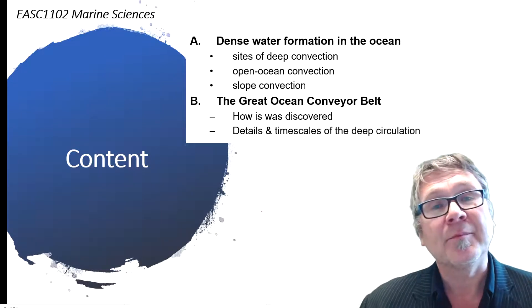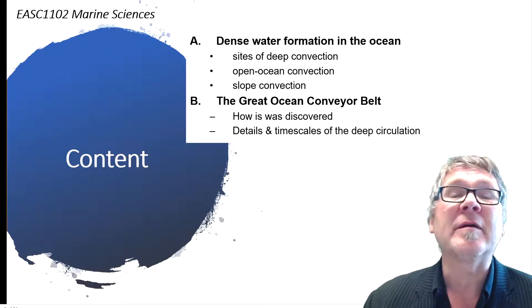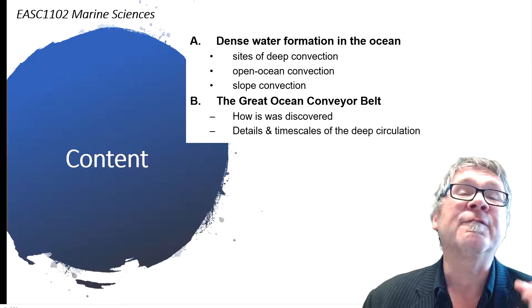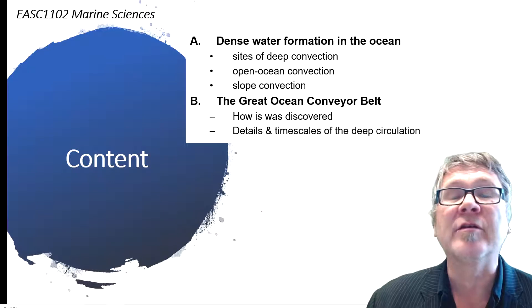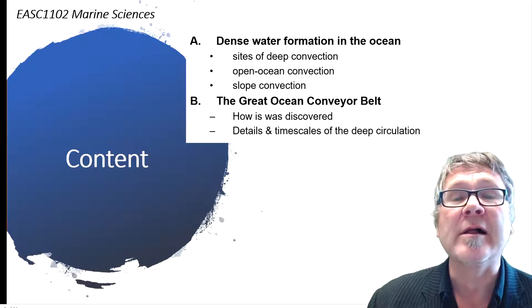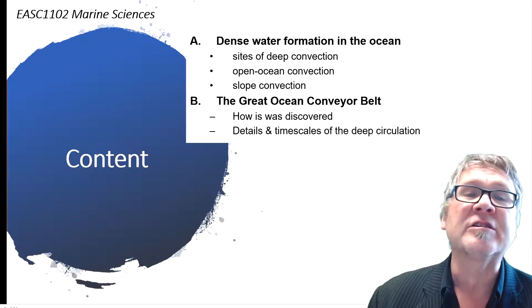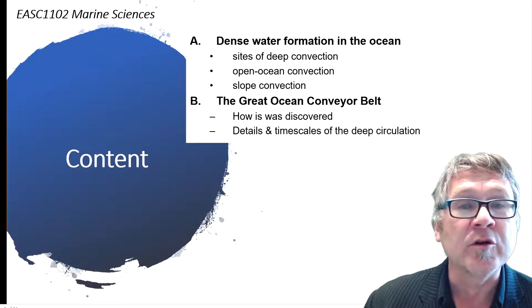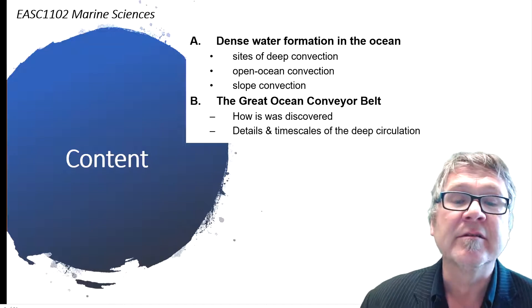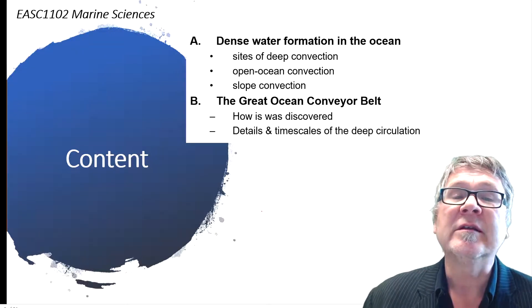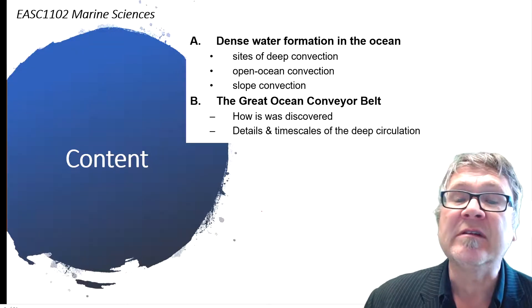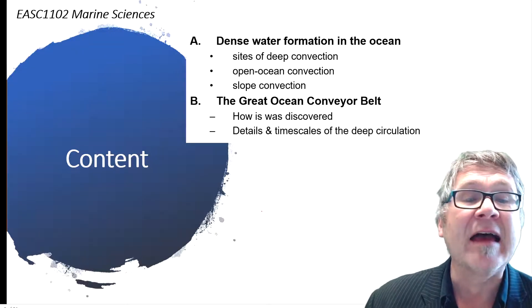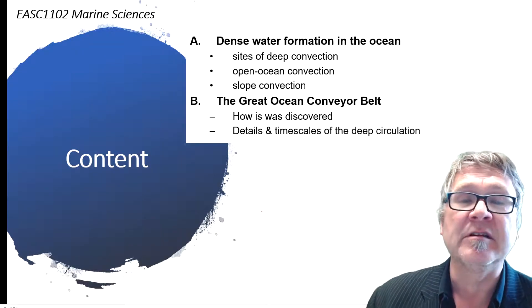In part B of this topic we focus on the great ocean conveyor belt, on the structure of the deep circulation, how it was discovered, and then a little bit about the details and the time scales of the deep circulation.